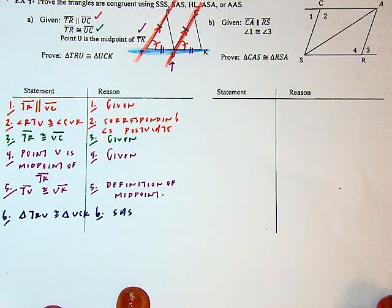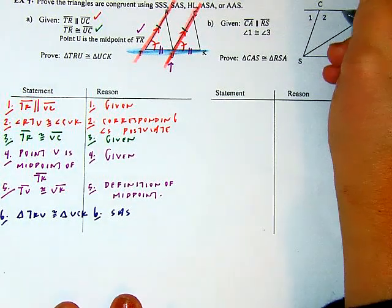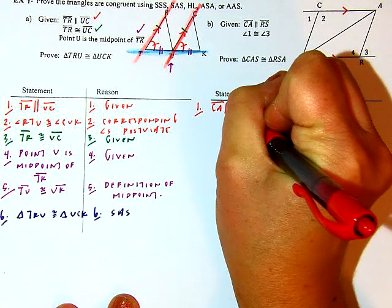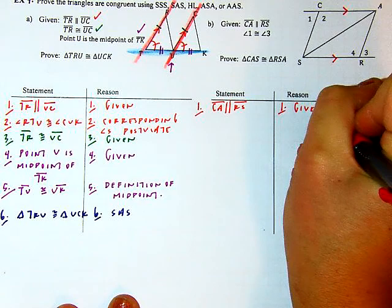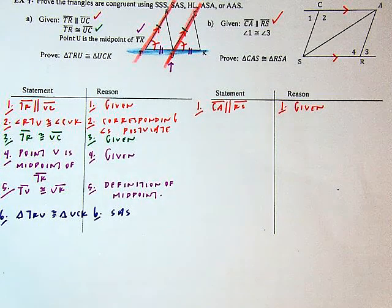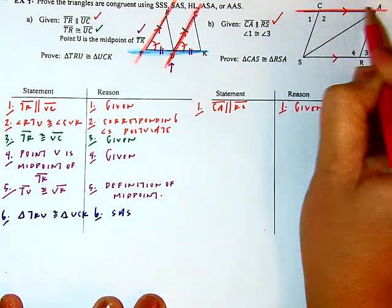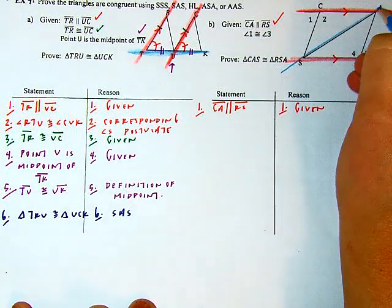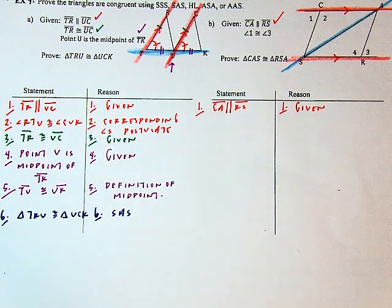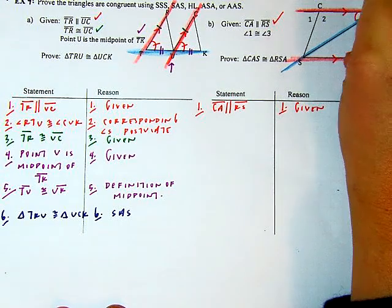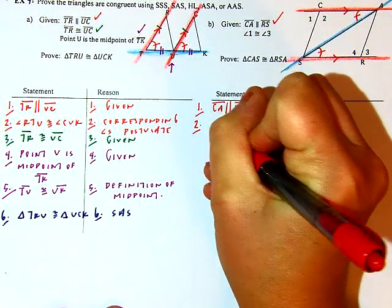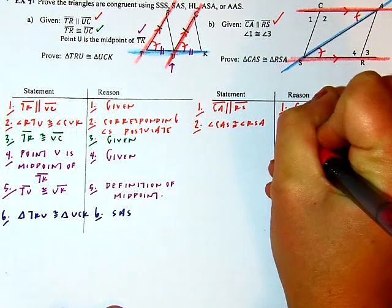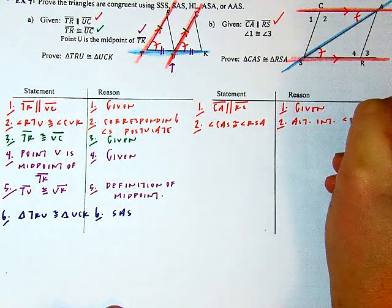One last proof: I'm given that CA runs parallel to RS. I'll write that as my first given statement. Then I'll emphasize those parallel pathways in red and elongate the diagonal as a transversal in blue. Those parallels lead me to a pair of alternate interior angles: angle CAS is congruent to angle RSA — alternate interior angles theorem.